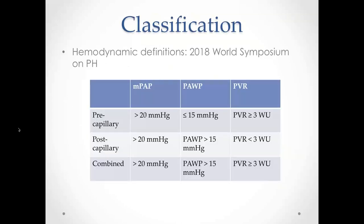The classification of pulmonary hypertension from a hemodynamic standpoint was last updated in 2018 at the World Symposium on Pulmonary Hypertension. At that time, the cutoffs for diagnosing pulmonary hypertension were updated in terms of mean pulmonary arterial pressure. In all forms of pulmonary hypertension, the cutoff for mean pulmonary arterial pressure is now greater than 20. To fit into one of the other categories, it's based on either the wedge pressure, PVR, or both.